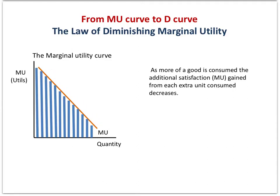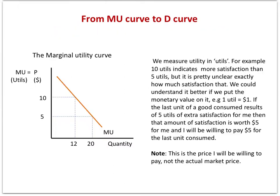The marginal utility curve slopes downwards. It shows that as consumers consume more of a good, they get less extra satisfaction from each additional unit consumed. Marginal utility is measured in units called utils. More utils represents more additional satisfaction and less utils represents less additional satisfaction.